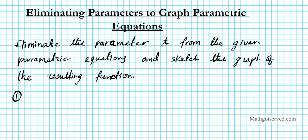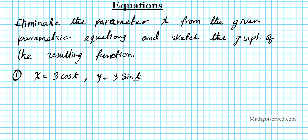We have the parametric equation x equals 3 cosine t, and y equals 3 sine t. So if you take a look at these two parametric equations, we notice that we have cosine and sine. So we need to think back to our trig identities and ask ourselves: what trig identity relates to sine and cosine?